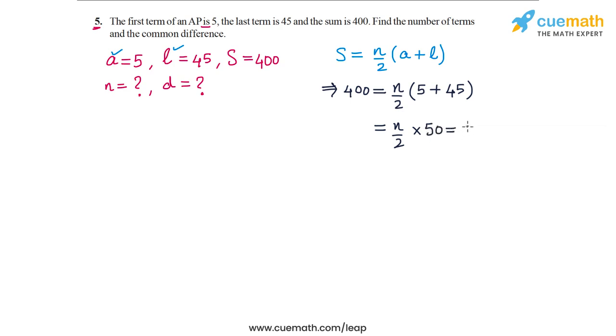And this is equal to, if we divide by 2, we get 25. So we get 25N. So the equation we get in N is 25N is equal to 400.